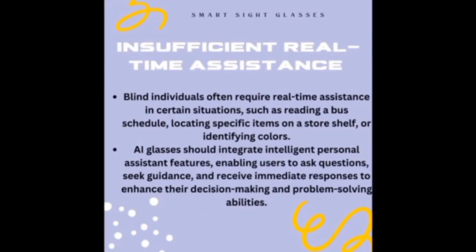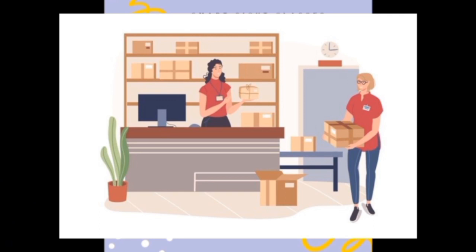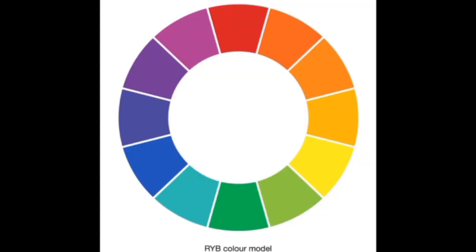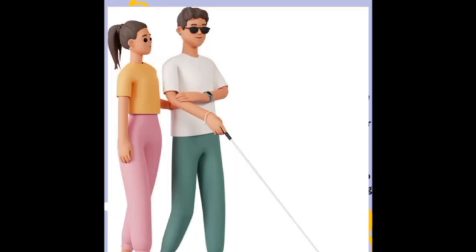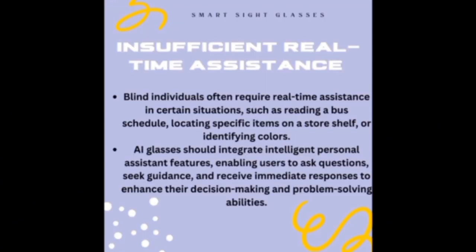Insufficient Real-Time Assistance: Blind individuals often require real-time assistance in certain situations, such as reading a bus schedule, locating specific items on a store shelf, or identifying colors. AI glasses should integrate intelligent personal assistance features, enabling users to ask questions and enhance their decision-making and problem-solving abilities.